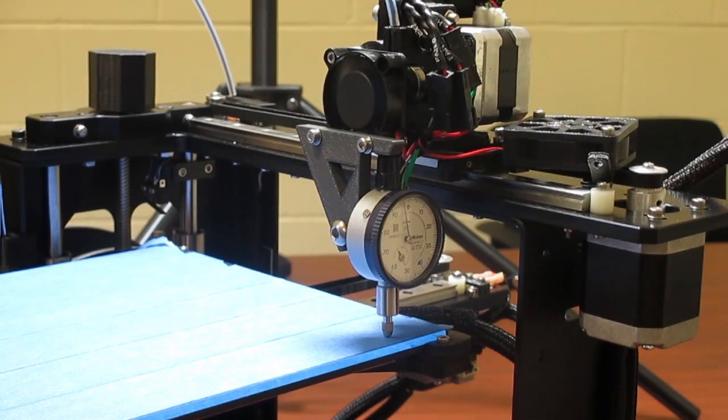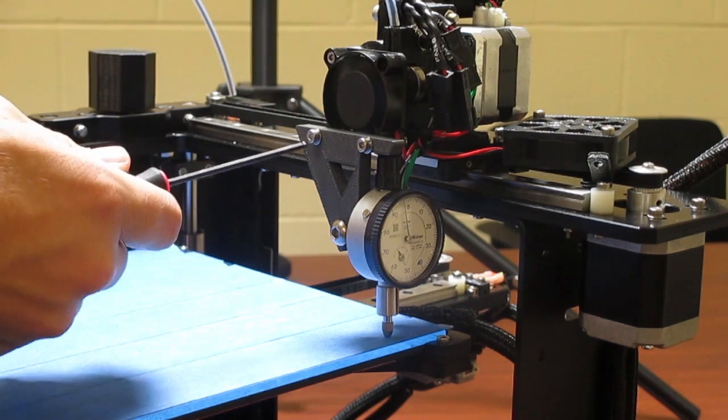After you've leveled your bed, take off the dial indicator holder by reversing the steps you did earlier. Also reassemble the fans.